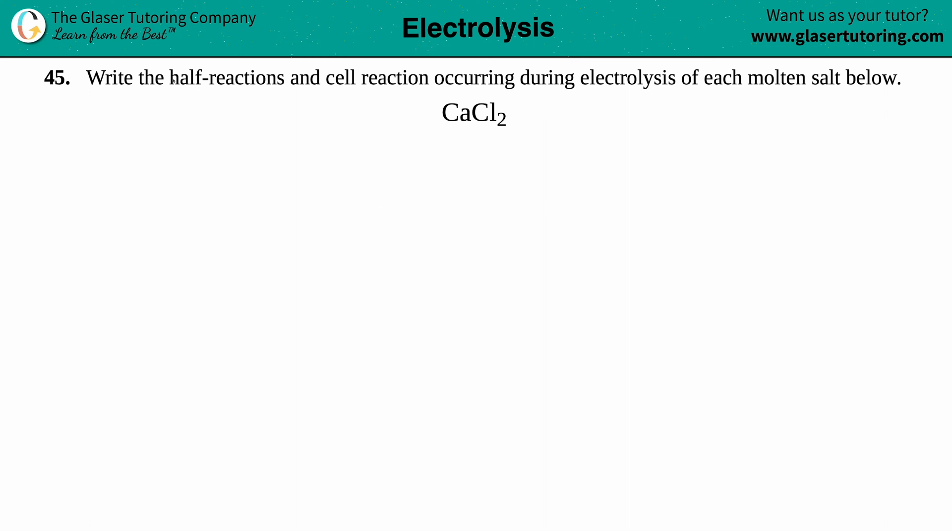Number 45. Write the half reactions and the cell reaction occurring during electrolysis of each molten salt below. And in this case, we have calcium chloride, which is CaCl₂.